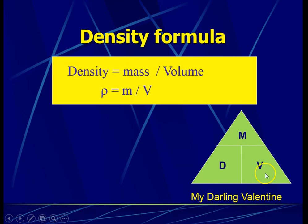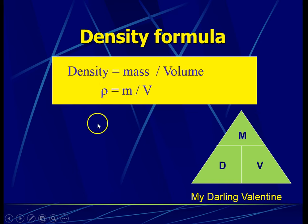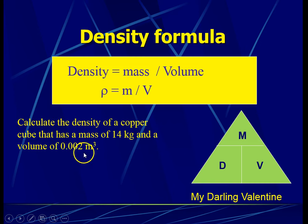Personally, I'm not a fan of the triangle method, but if you find it useful for remembering the formula and manipulating variables, do go ahead and use it. I would suggest working the formula in algebraic form. Let's have a look at a simple worked example: how do we calculate the density of a copper cube that has a mass of 14 kilogram and a volume of 0.002 meter cube?